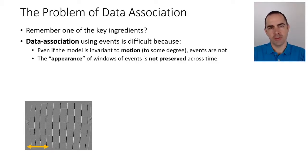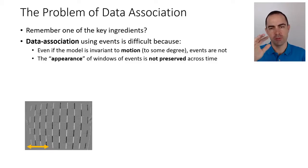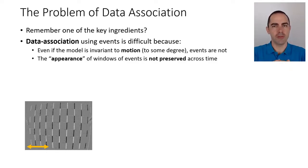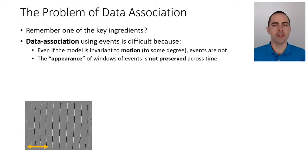Even if the model we are trying to match is invariant to motion to some degree — such as the star shape — it was user-defined and didn't depend on motion. It's somehow invariant to affine motions, but we only plot one star; we didn't plot the star for all possible motions. Events are not motion invariant because events highly depend on the direction of motion.